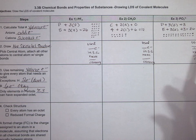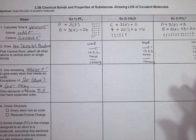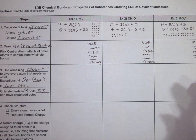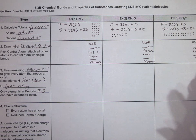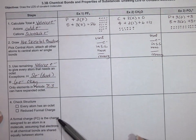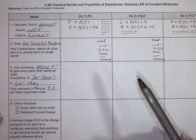Hi, welcome to the video on drawing Lewis dot structures of covalent molecules. We've already seen how to draw Lewis dot structures of ionic compounds, which are made typically from metals and non-metals, where there's a transfer of electrons when bonds are formed. For covalents, these are made with non-metal atoms only, and electrons are shared in covalent bonds. Let's take a look at the four steps for drawing Lewis dot structures of covalent molecules — they're quite different from ionic.